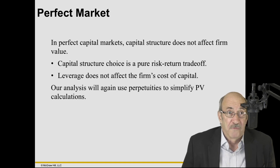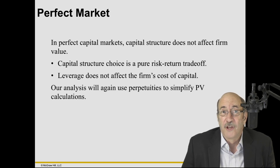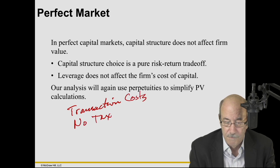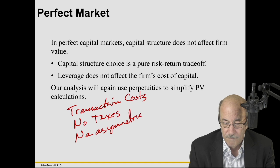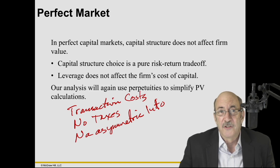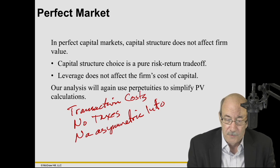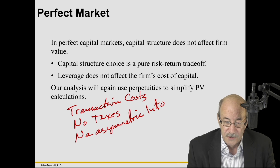What is a perfect market? It's a market in which there are no imperfections such as transaction costs, no taxes, no asymmetric information. By asymmetric information, what that means is that everybody is informed equally well about the situation and everybody knows everything about everything. We know that's not quite realistic. And no agency costs.